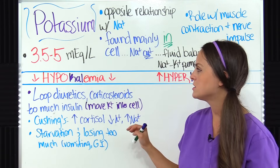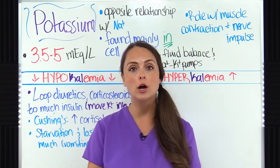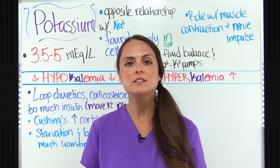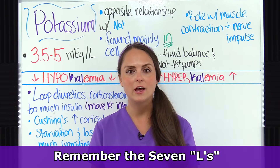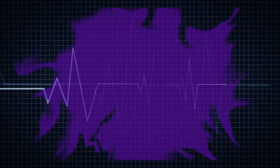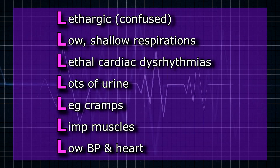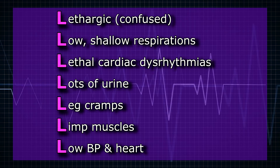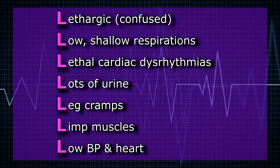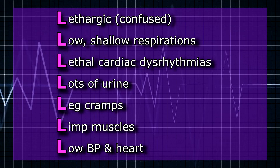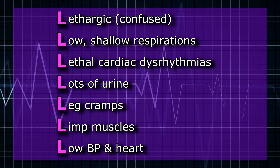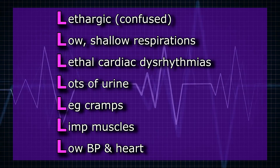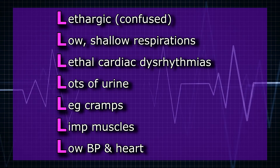For the signs and symptoms of hypokalemia, remember everything is going to be low and slow — use the seven L's. First L: lethargic and confused. Second L: low shallow respirations. Third L: lethal cardiac dysrhythmias — they may have ST depression, a shallow T wave, or a prominent U wave. Fourth L: lots of urine with frequent urination as kidneys can't concentrate urine. Fifth L: leg cramps. Sixth L: limp muscles with decreased deep tendon reflexes. Seventh L: low blood pressure and heart rate.